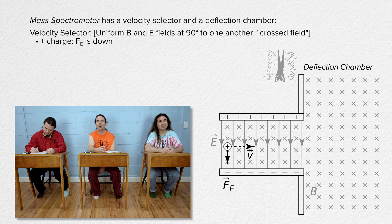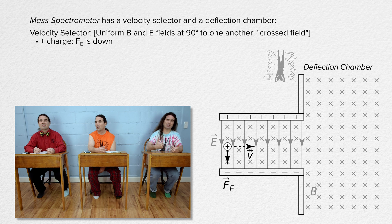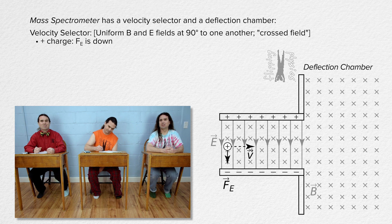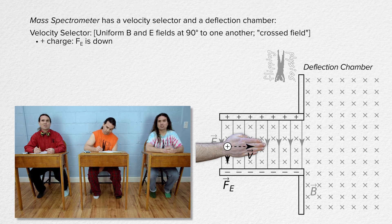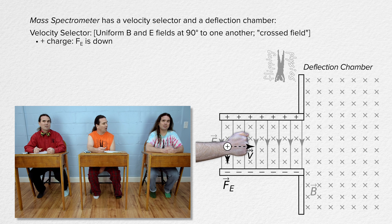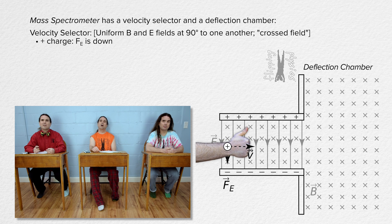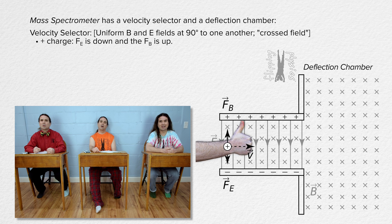We need to use the right-hand rule to determine the direction of the magnetic force. Point the fingers of my right hand to the right with the direction of the velocity, curl my fingers into the screen because that is the direction of the magnetic field, and my thumb points up, which is in the direction of the magnetic force acting on this positive charge.